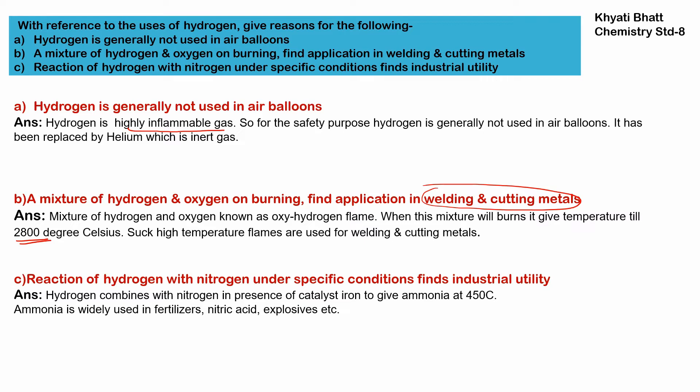The reaction of hydrogen with nitrogen under specific conditions finds industrial utility. When the reaction of nitrogen and hydrogen happens, we get ammonia — that is NH3 — and this ammonia has a wide variety of uses in industry, as it is used in fertilizer, nitric acid, explosives, and so on.